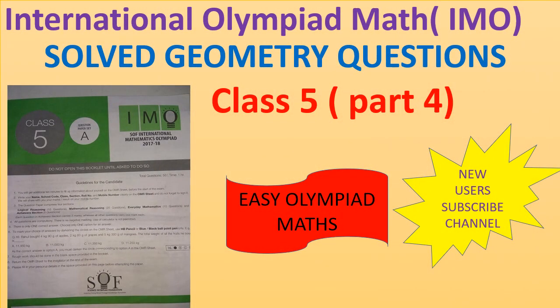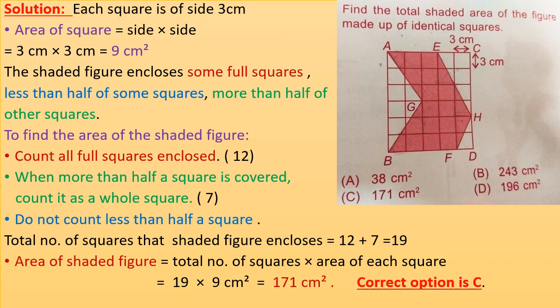Hello everyone, welcome to Easy Olympiad Maths. These are solved geometric questions from an Olympiad book. New users please subscribe to the channel and hit the bell icon to get notifications for new uploads. Let's start the video with our first question: find the total shaded area of the figure made up of identical squares.